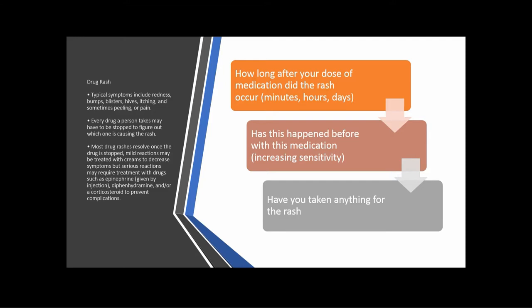Figure out how long after the dose of medication the rash started — was it minutes, hours, or days? Sometimes you can have quite a delayed reaction. Has this ever happened before with their TB medications? There could be increasing sensitivity. Patients on intermittent medications may report that a couple weeks ago they had a little itching that went away, then a little rash that resolved with Benadryl — they're not reporting those things because they're so transient. Getting that information helps the physician make decisions. Also ask if they've taken anything for the rash, so planned interventions aren't interfered with.